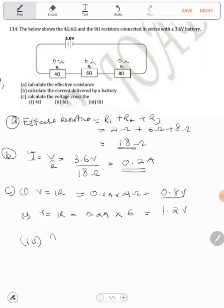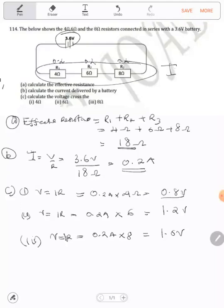For R3, voltage equals current times resistance. So 0.2 amperes × 8Ω gives us 1.6 volts. When you add all three voltages, they give you the total 3.6V. Keep in mind, in series, current is the same but voltage is different. That's why we found different voltages across each resistor.